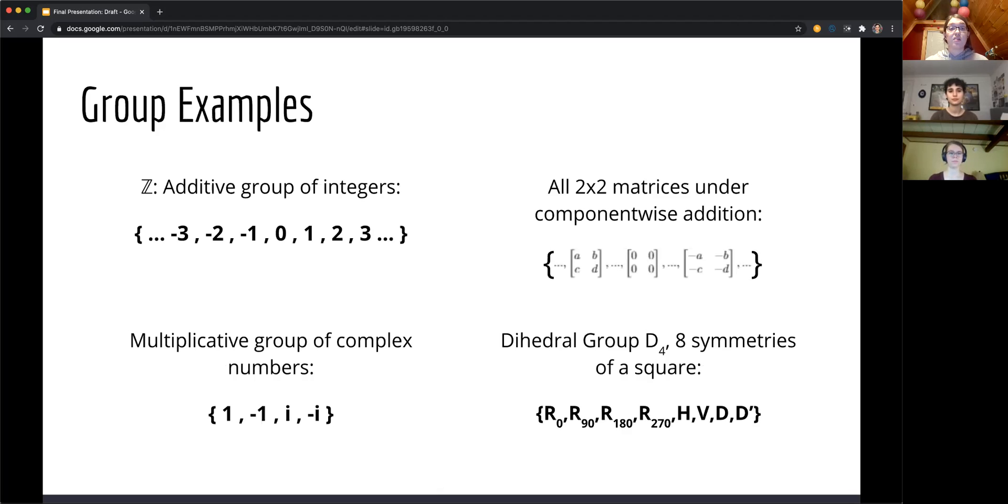Here are a couple of examples of groups. The first example is the set of all integers under the binary operation of addition. The second is the set of all 2x2 matrices under the binary operation of component-wise addition. And the third which we explore further is the set of complex numbers under the binary operation of multiplication.